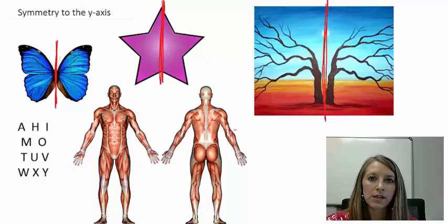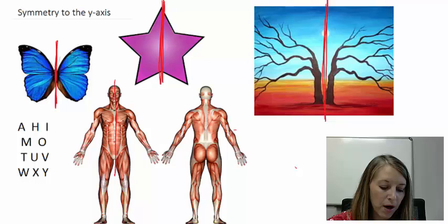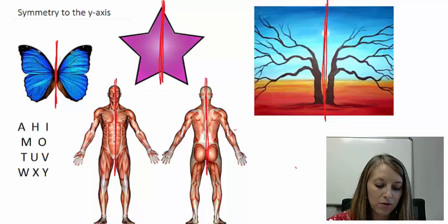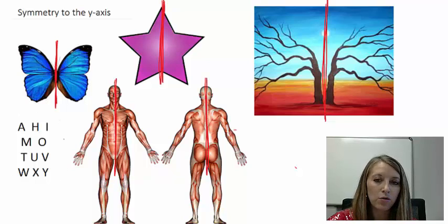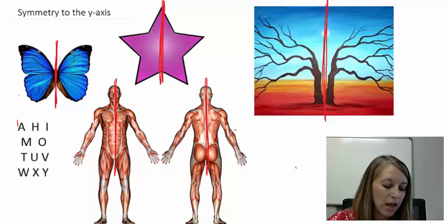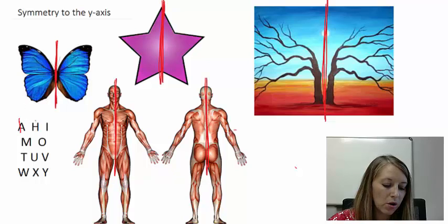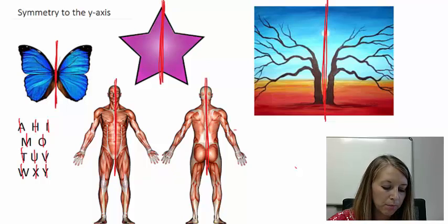Humans are, interestingly enough, symmetric to the y-axis, meaning that both sides of our body are exactly the same whether we're looking at the front or the back view. If we look at the alphabet, we have quite a few letters that are symmetric to the y-axis. If I fold them over a line down the middle, they would match on both sides. So, symmetric to the y-axis is when you fold it down the vertical axis in the middle and it matches on both sides.